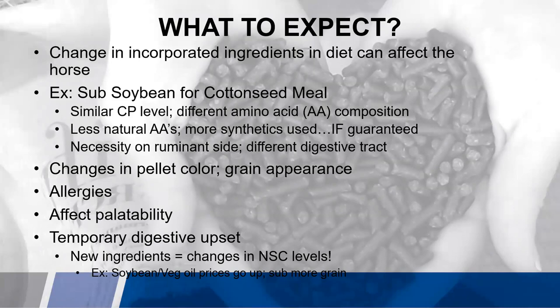Non-structural carbohydrates — NSC — stands for basically your starches and sugars in the diet. If you look at a tag and you see starch and sugar, to get the total NSC level you have to add the starch and the sugar together. An example of this: if soybean oil or vegetable oil prices go up, that formula might then use more grain to meet the fat percentage, and what ends up being the result is you could have a higher starch and sugar percent down the road.